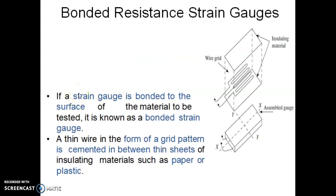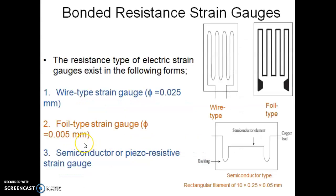In bonded resistance strain gauges, the wire is placed between two thin sheets of paper or plastic, cemented to form a single unit, and bonded to the surface of the material to be tested. Most strain gauges used nowadays are of bonded type. Bonded gauges are further classified as wire type (wire diameter ~25 microns), foil type (wire diameter ~5 microns), and semiconductor or piezoresistive strain gauges.